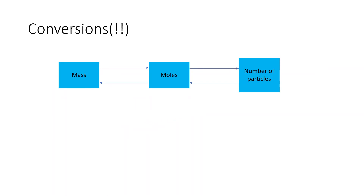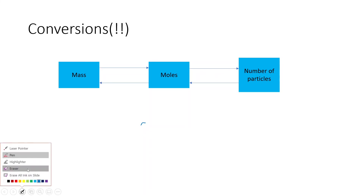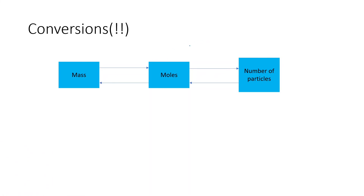Now for conversions. We have discussed mass, moles, and number of particles. To convert from mass to moles, simply divide by molar mass. To convert back from moles to mass, multiply by molar mass. To convert from moles to number of particles, multiply by Avogadro's number (L). To go back from number of particles to moles, divide by L.